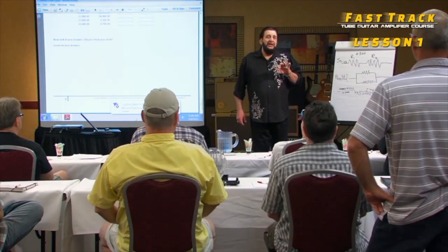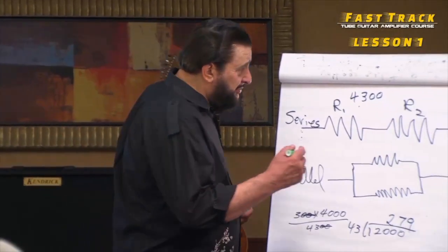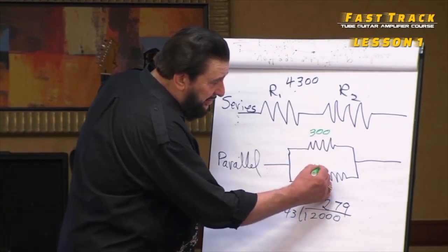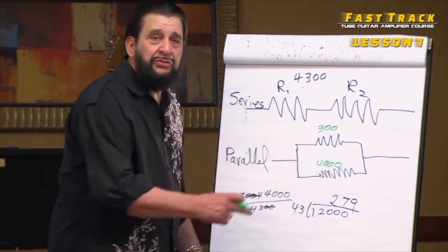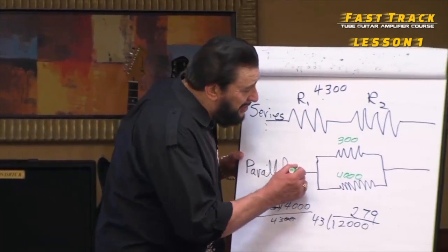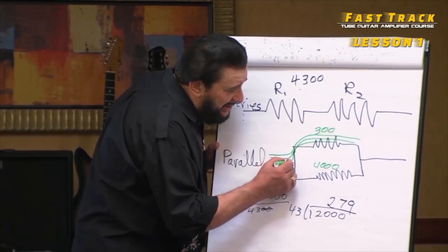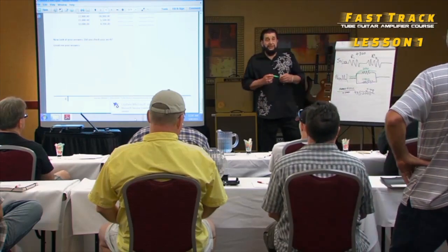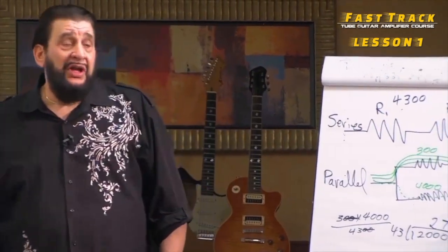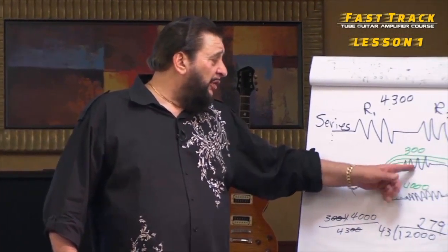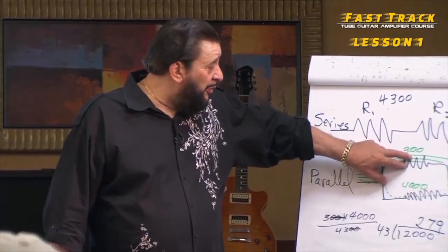A good question: why wouldn't all the current go through the lesser-value resistor in the parallel circuit? Most of it does — it's very lopsided. If you have 300 ohms and 4,000 ohms in parallel, the total is nearly 279 ohms, which is almost 300, so almost all the current goes through the 300-ohm resistor with just a tiny bit trickling through the 4,000-ohm one. This matters in a power circuit — you might want a higher wattage resistor on the lower-value side, maybe 1 watt vs. a half watt.